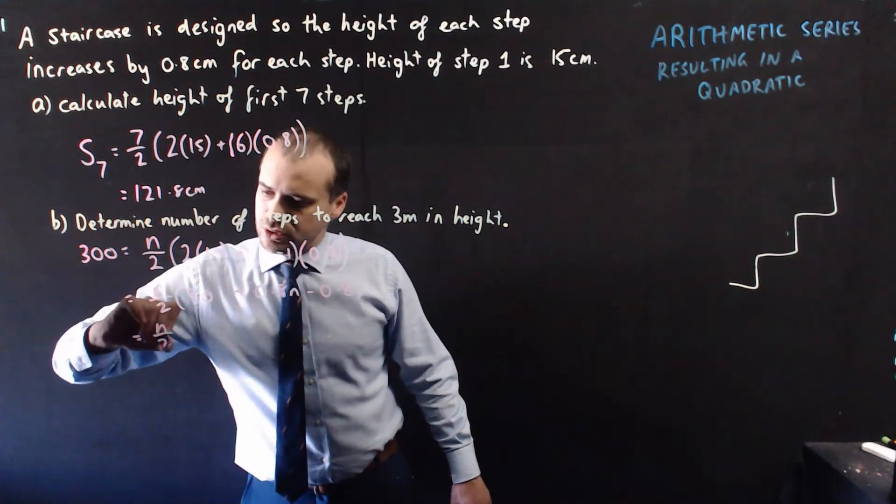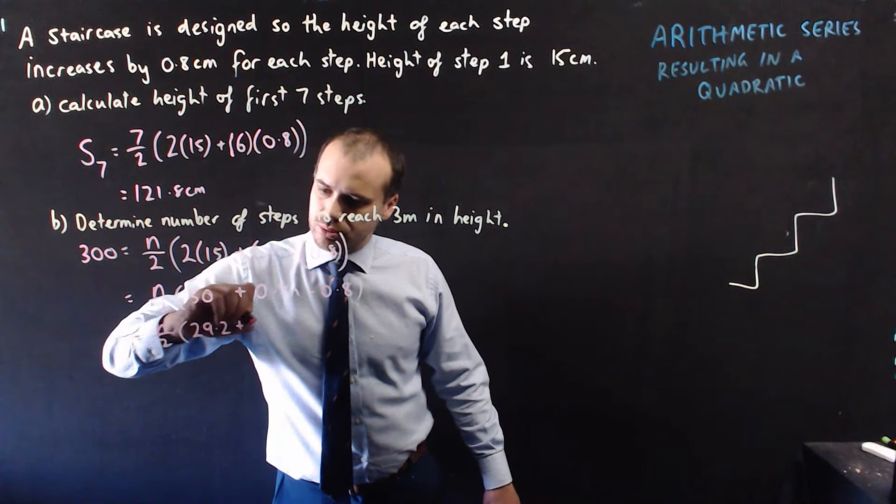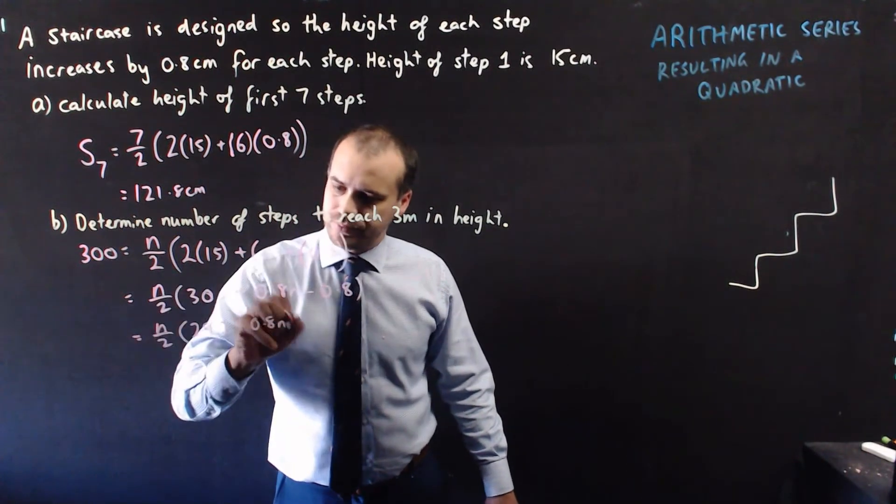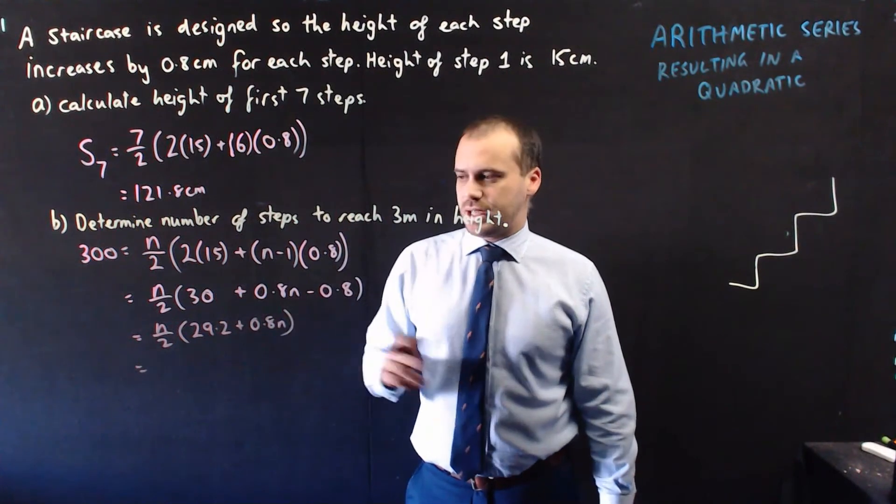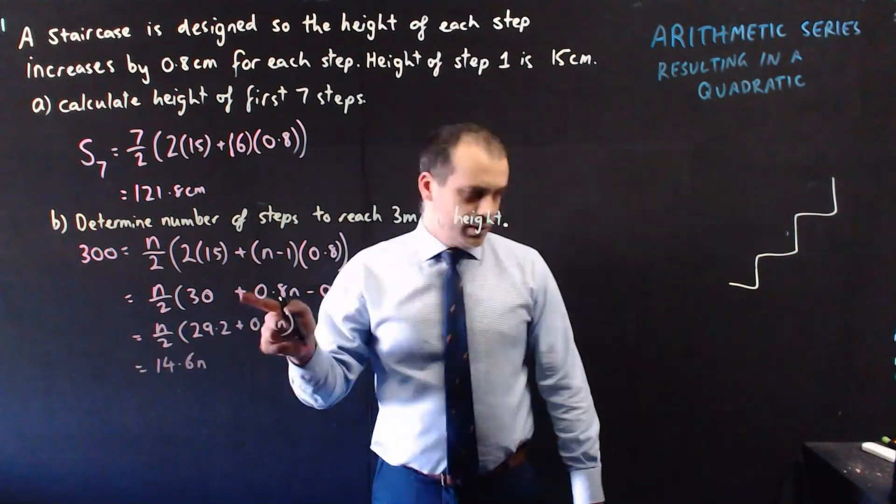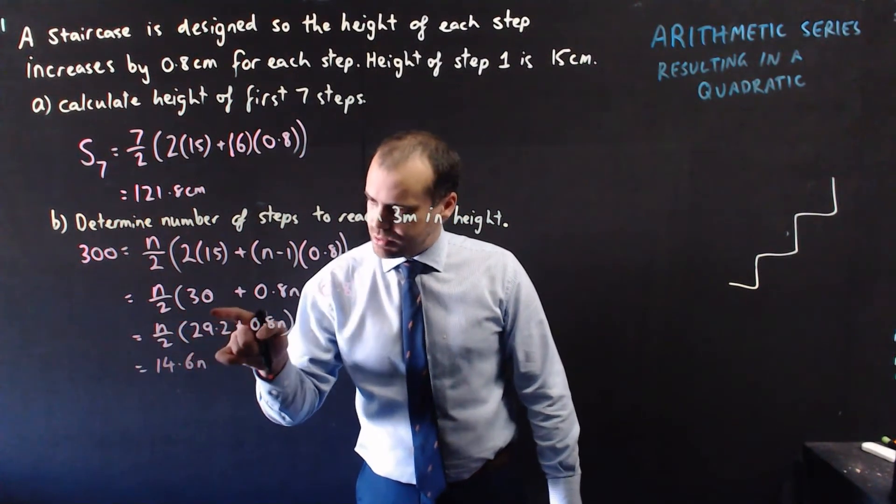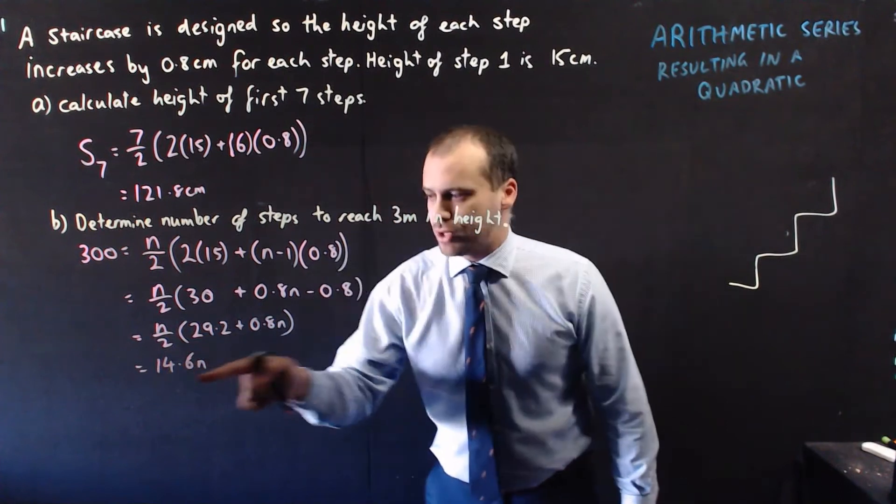So we get n over 2, bracket, 29.2, plus 0.8n, and then, we can expand these brackets, by multiplying this by n over 2, and this by n over 2. Now, this first one, n times that is 29.2n, but then dividing by 2, we get 14.6, so we get 14.6n.